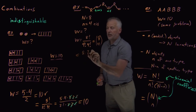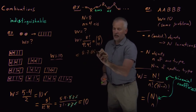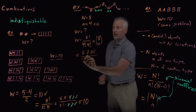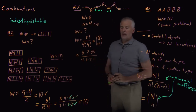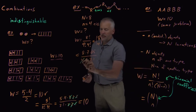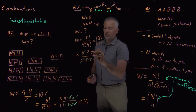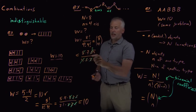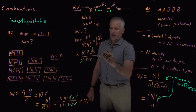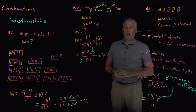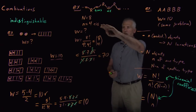Numerically: the 4 and 2 cancel the 8, the 3 turns the 6 into a 2, leaving 2 times 5 times 7, which is 70. So if all I wanted to know was how many different polymers I can make with eight linkages where four are cis, there are 70 different oligomers.